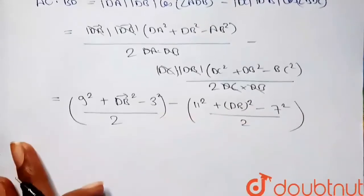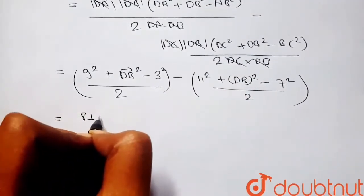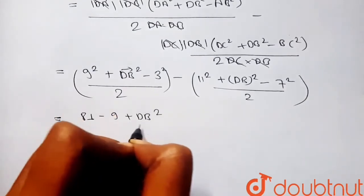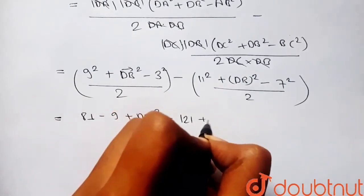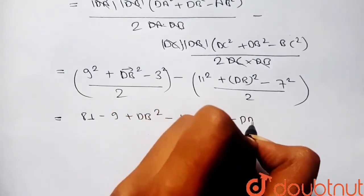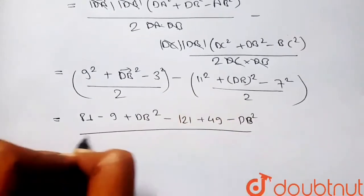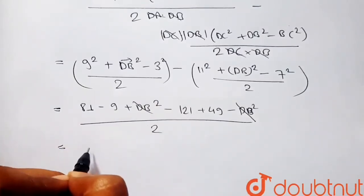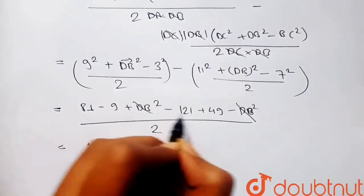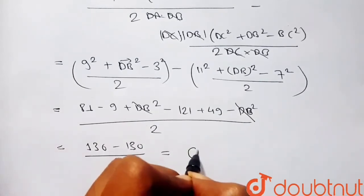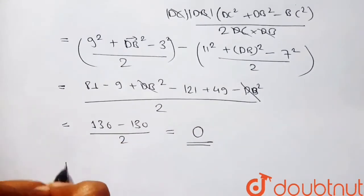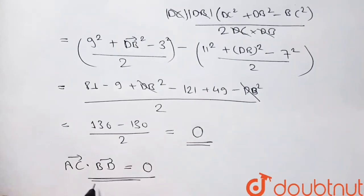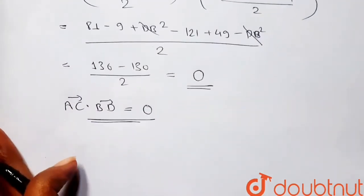So this becomes: 9 squared minus 3 squared minus 11 squared plus 7 squared, divided by 2. That is 81 minus 9 minus 121 plus 49, divided by 2. Here DB squared cancels out. 81 plus 49 equals 130, and 9 plus 121 equals 130, so the result is 0. We get vector AC dot vector BD equals 0.